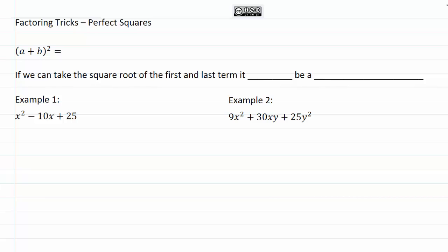Factoring tricks: perfect squares. For this we're going to start by looking at the expression (a + b)² Remember when we square something that's the same thing as taking that expression and multiplying it by itself.